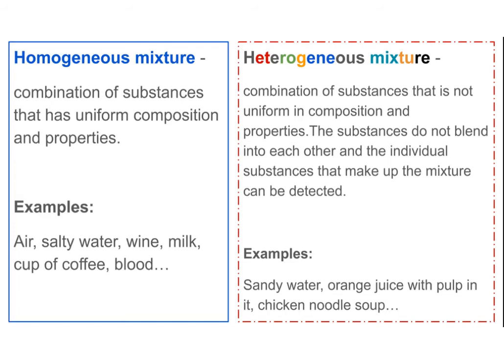Homogeneous mixtures are combinations of substances that are so very well mixed that they appear uniform in composition and properties. For example, air is a mixture of oxygen, nitrogen, and some other gases such as carbon dioxide, but we cannot readily tell where each molecule is. Dissolved salt in water disappears and looks like it's completely gone, but the water becomes very salty. It's a very good mixture, homogeneous in appearance, but it still contains different substances that preserve their original properties. Wine, milk, and coffee are also examples.